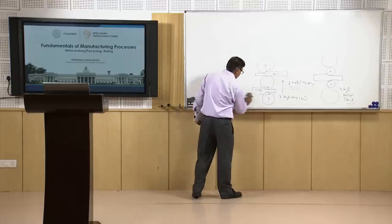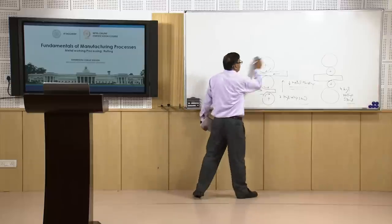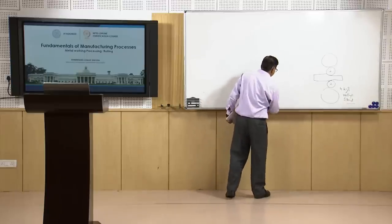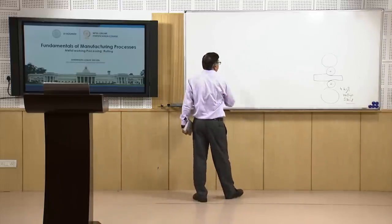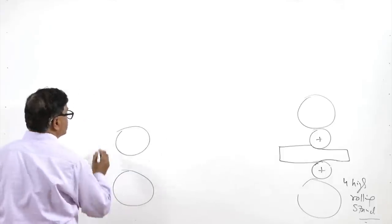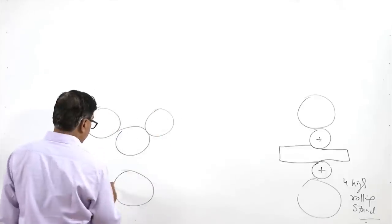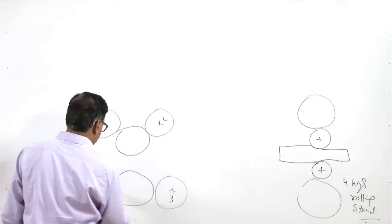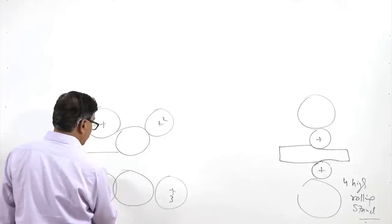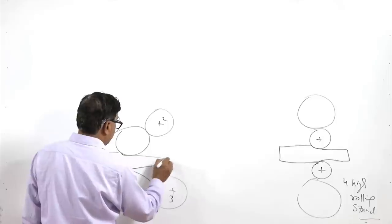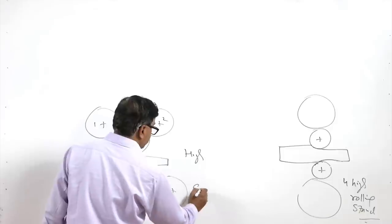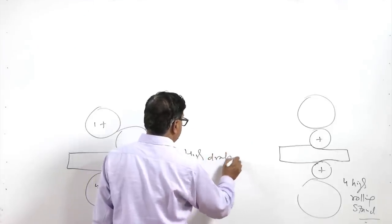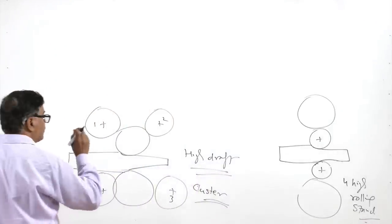Another arrangement commonly used for high draft values is the cluster arrangement. In a cluster arrangement, small diameter working rollers are used, and these rollers are supported with the help of four other backup rollers from four sides — making two small working rollers with four support rollers. This cluster rolling machine is used for high draft using small diameter rollers.